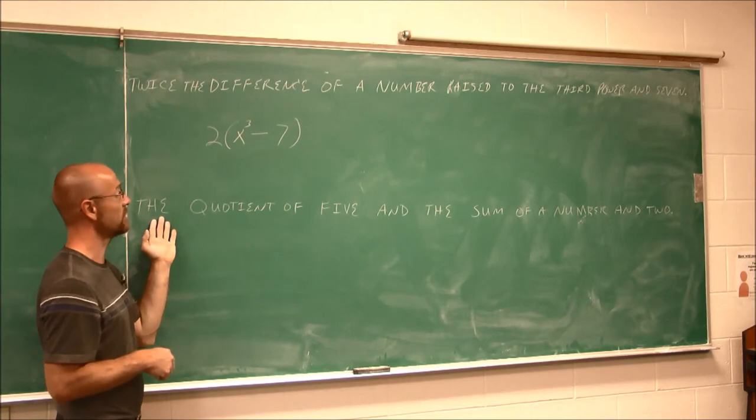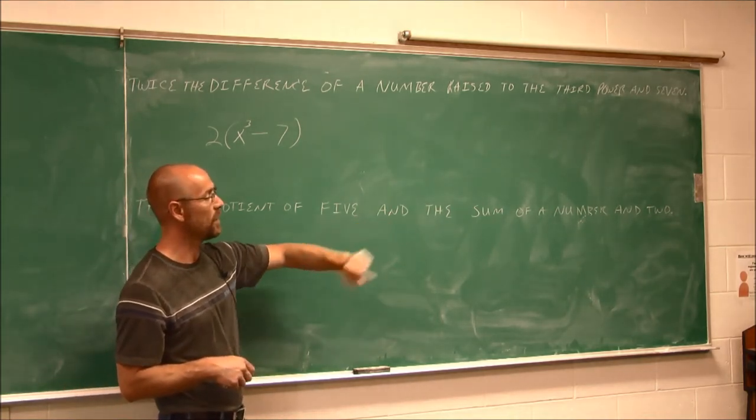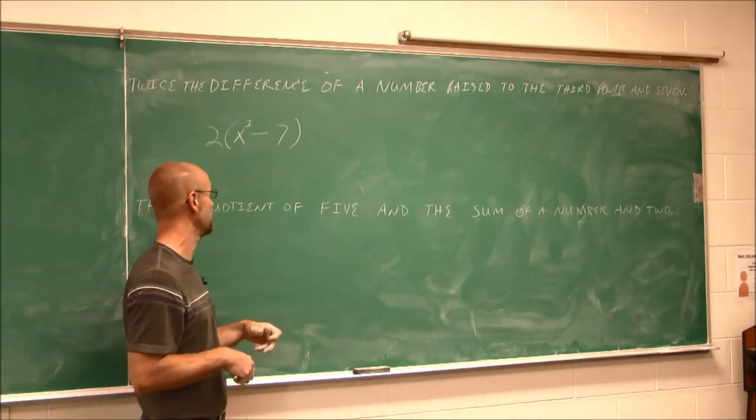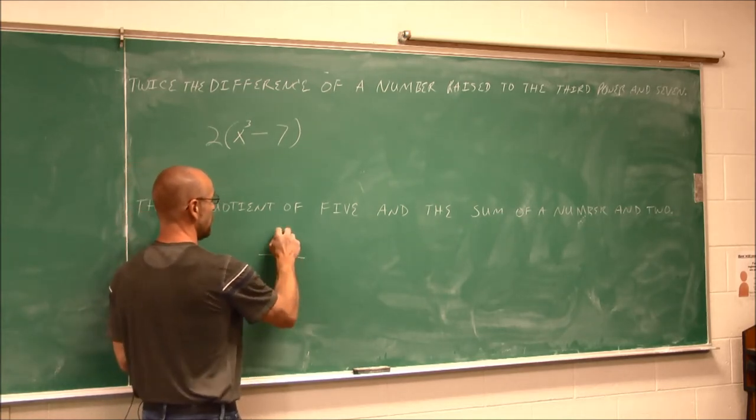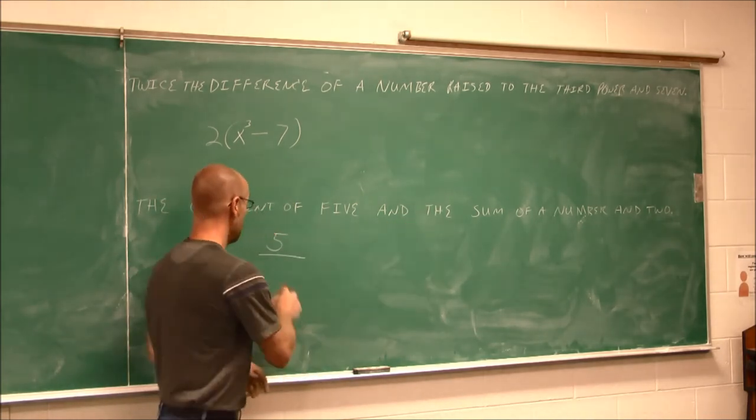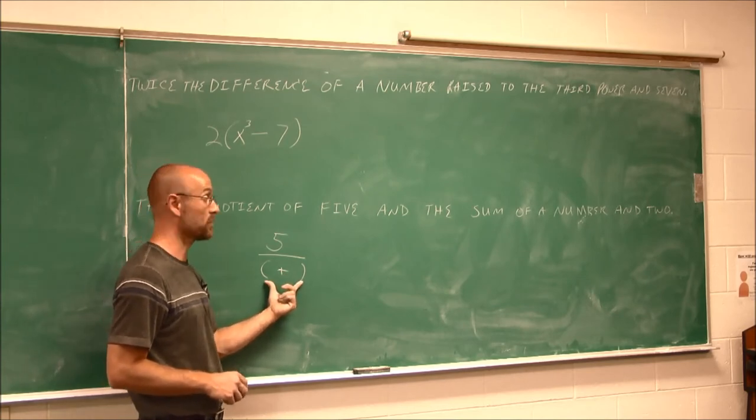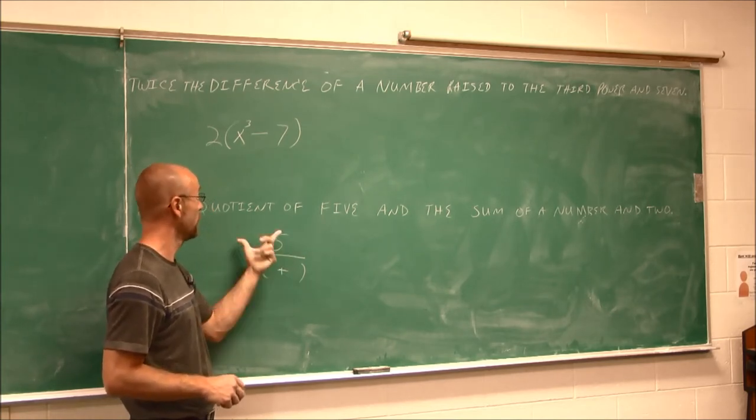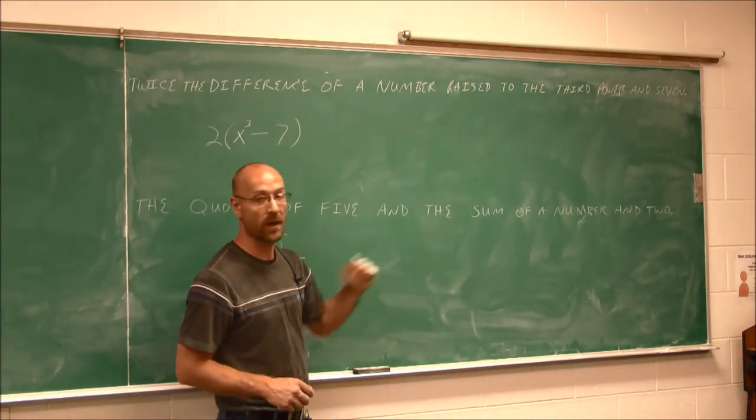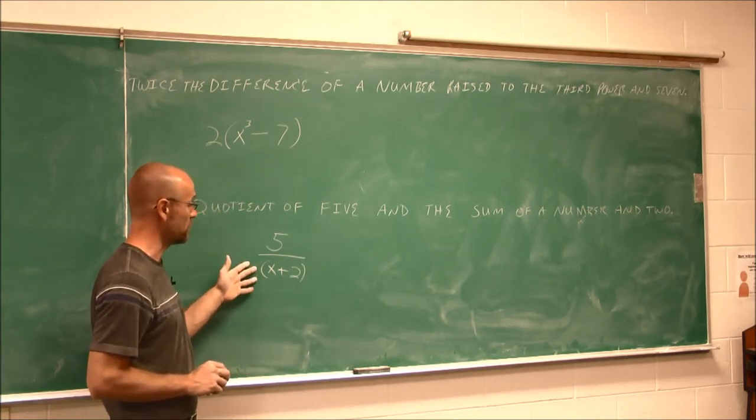All right, the next one says the quotient of 5 and the sum of a number and 2. So we have to think of this as maybe a compound sentence. The quotient of 5. So the quotient of 5, because this number came first, and the sum, well, sum tells me to add. And this would be the next value. I'm going to have the quotient of 5 and the sum of a number and 2. A number, I'll assign that x and 2. So we're able to simplify that.